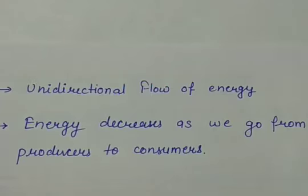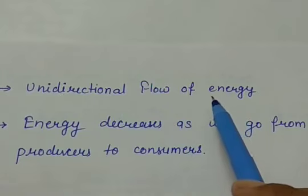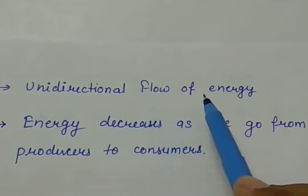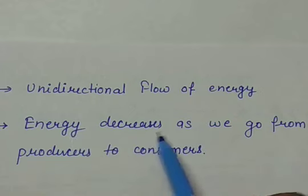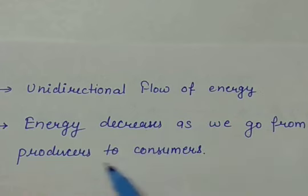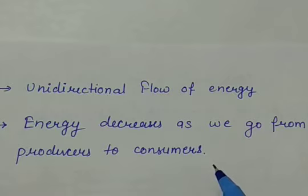Important points about energy flow: there is a unidirectional flow of energy starting from producers going toward consumers. Energy always decreases as we go from producers to consumers, because at each level some amount of energy is used up to perform various functions of that organism. So only a very small amount of energy is transferred at each level.